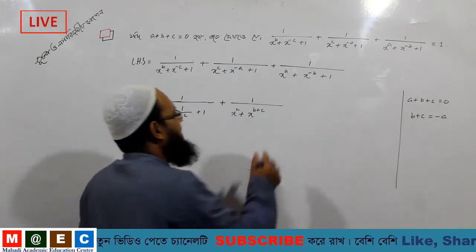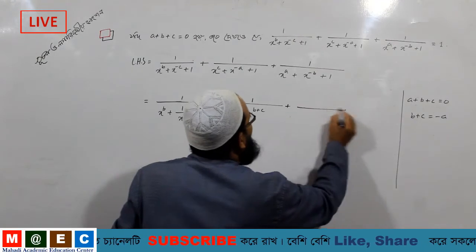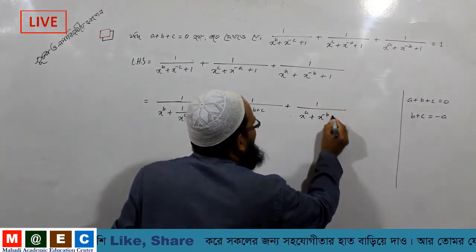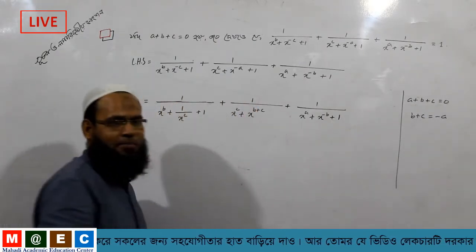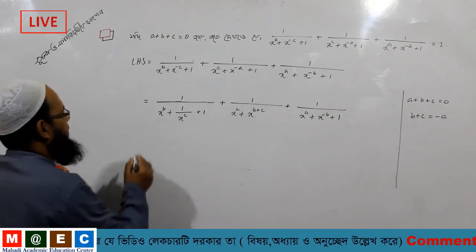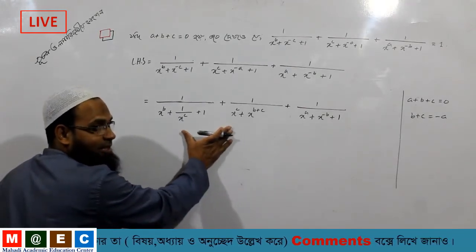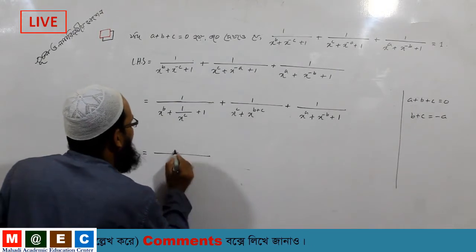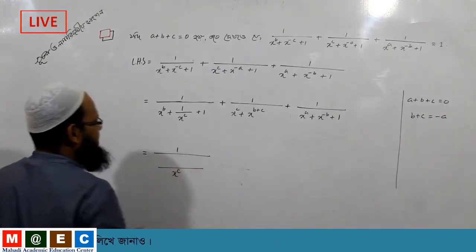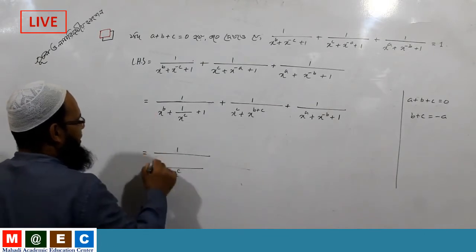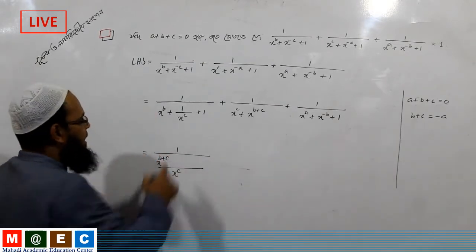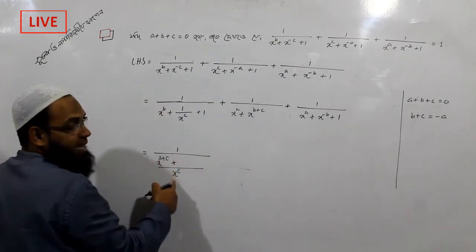If our equation is zero, we will see that x to the power a. Let's see. Here, we will have x to the power c, x to the power c, x to the power b, x to the power b plus c — right — and plus x to the power c, x to the power c.